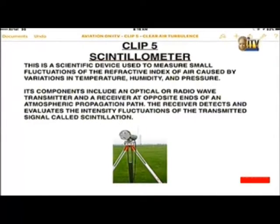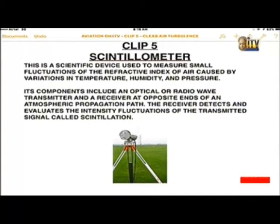Scintillometer — that photograph shows an average scintillometer used to determine where CAT is likely to occur in the skies. It is a scientific device used to measure small fluctuations of the refractive index of air caused by variations in temperature, humidity, and pressure. Its components include an optical or radio wave transmitter and a receiver at opposite ends of an atmospheric propagation path; the receiver detects and evaluates the intensity fluctuations of the transmitted signal, called scintillation.